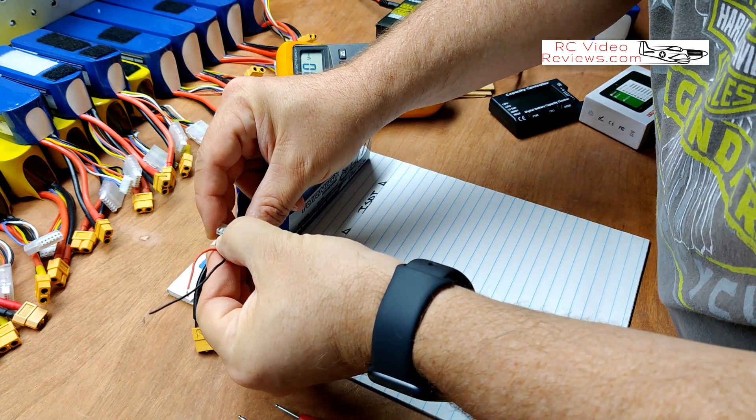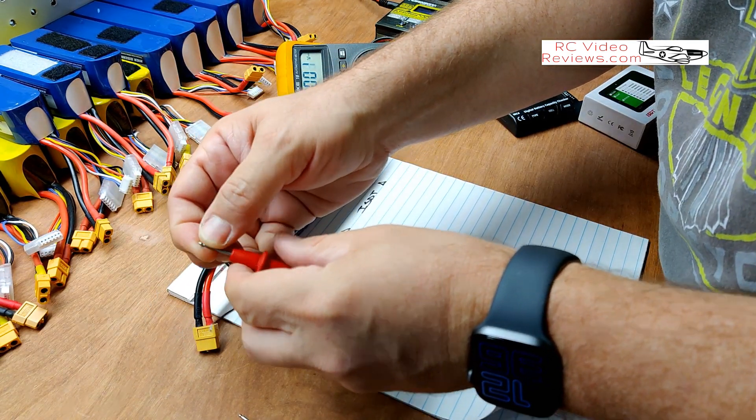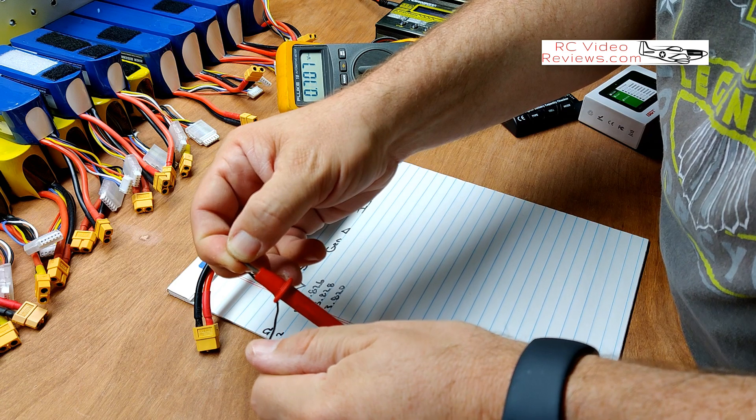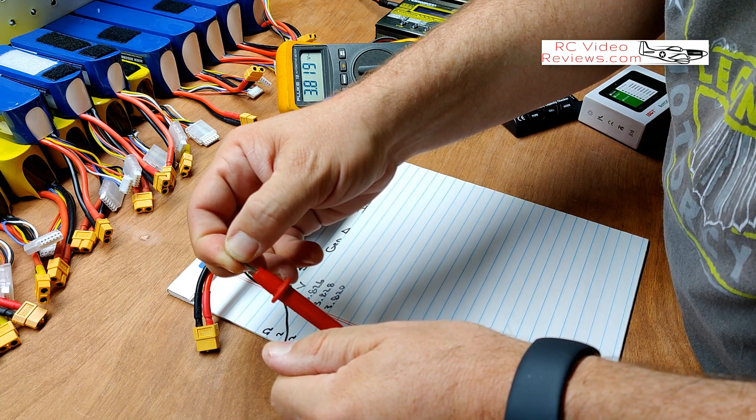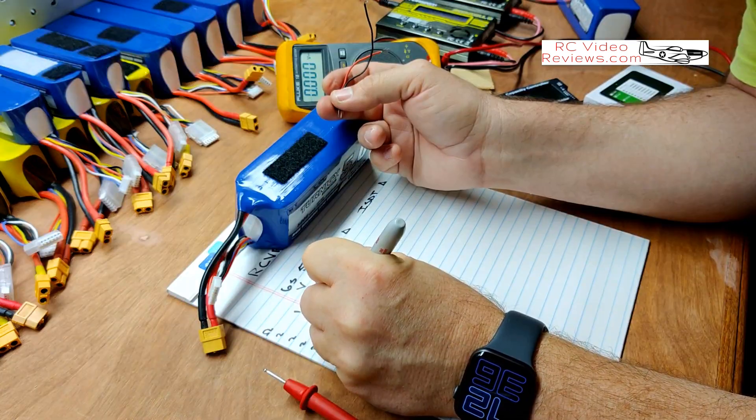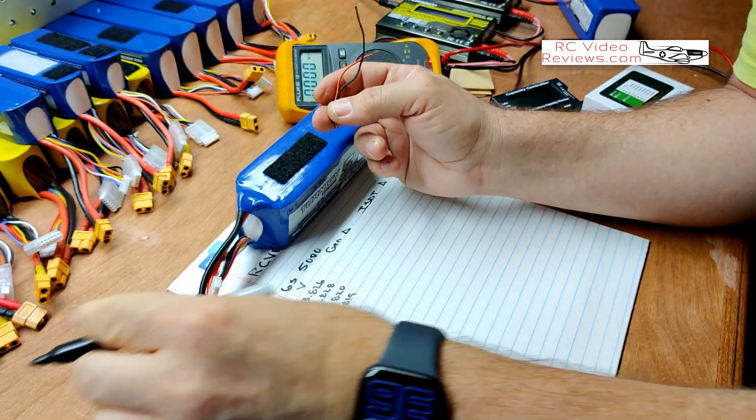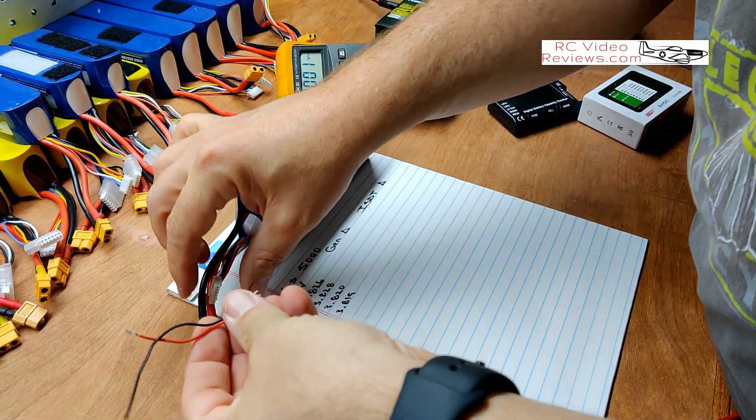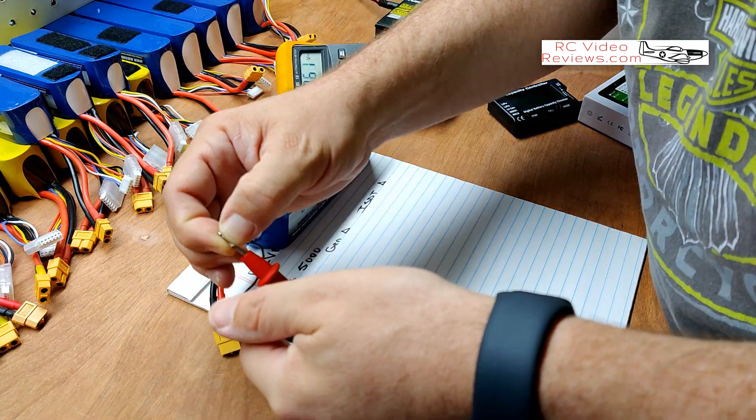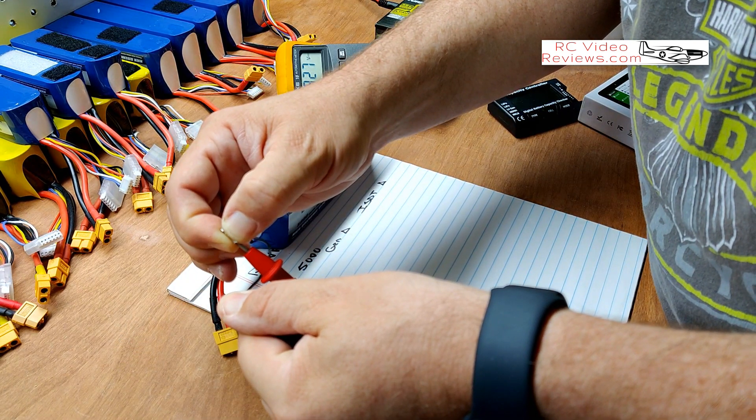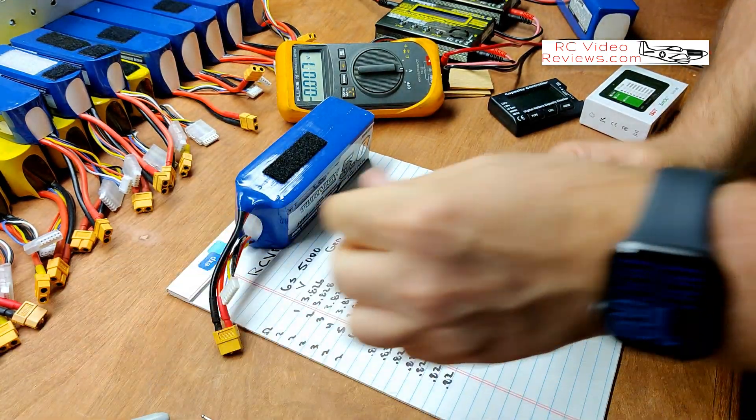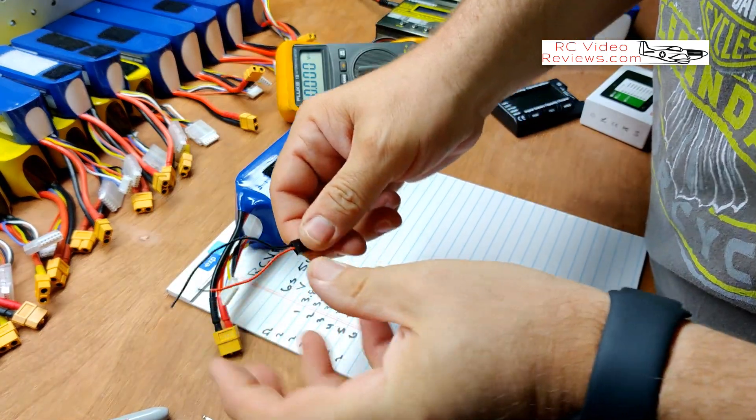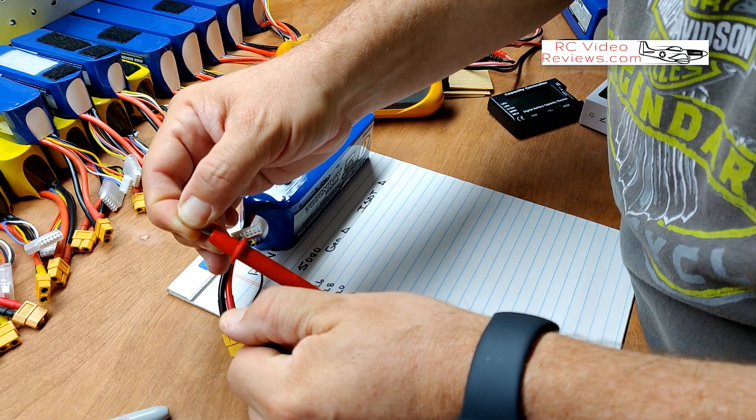And let's take a look at number four. 3.819. And number five. 3.827. And finally number six. 3.819.